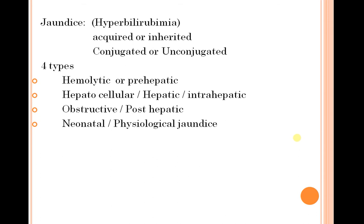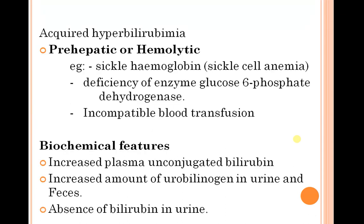The four types of jaundice are: hemolytic or pre-hepatic, hepatocellular or hepatic and intra-hepatic, obstructive or post-hepatic, and neonatal or physiological jaundice. Pre-hepatic causes include sickle cell anemia and glucose-6-phosphate dehydrogenase deficiency. Biochemical features include increased unconjugated bilirubin in plasma and increased urobilinogen in urine and feces, but absence of bilirubin in urine.